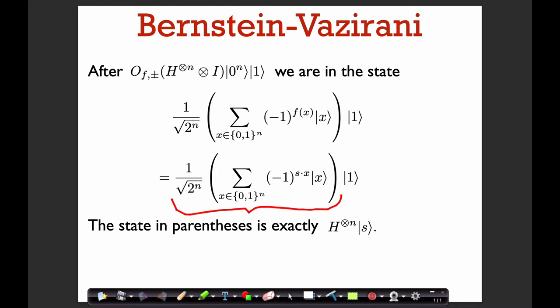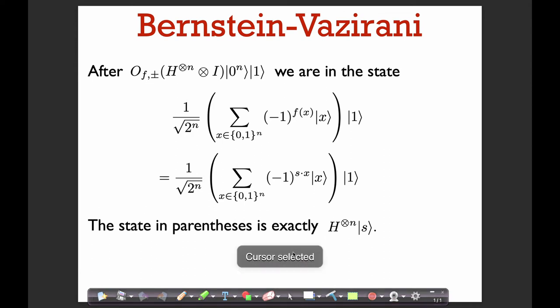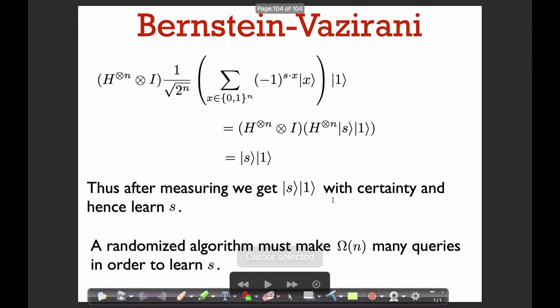What is this state that we've created on the first register? This is exactly the Hadamard times s — the action of the Hadamard on the basis state s. So in the first register we've actually created the Hadamard acting on s. What that means is that if we apply Hadamard to the first register again, that is just going to bring us back to the state s, since Hadamard times Hadamard is the identity. So when we apply the Hadamard on the first register again, we're just left in the state s tensor 1, and after measuring we get that state with certainty and can learn s.